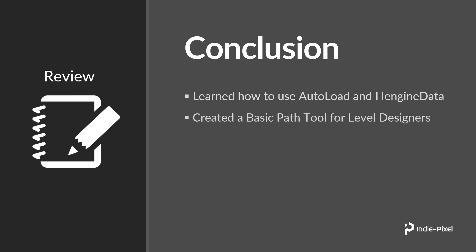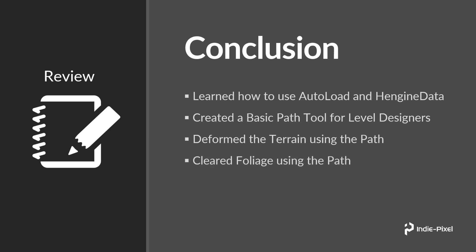We then created a basic path tool for level designers, so we can let an artist or level designer define where they want the paths, and then our procedural system ingests those particular paths and flattens out the terrain. We deformed the terrain using the path, and then we cleared the foliage because obviously we don't want trees and rocks on our path — unless we want different foliage on the path. And then finally we textured the terrain using the path.